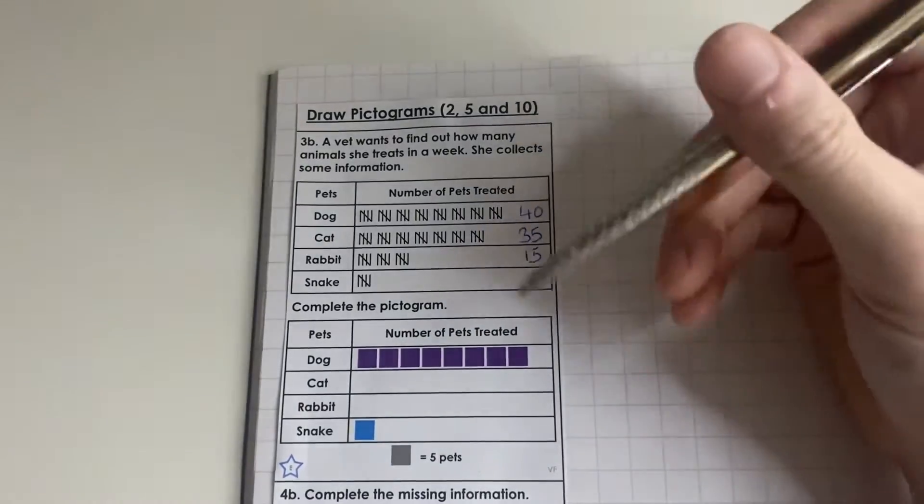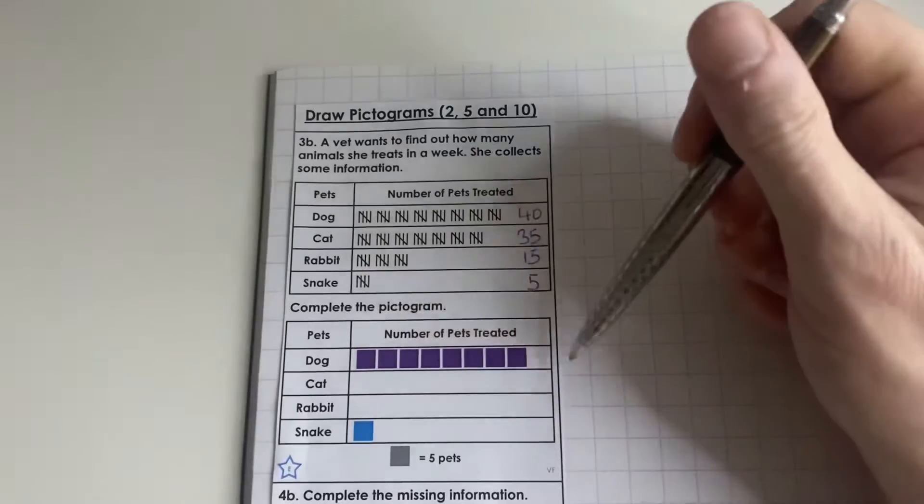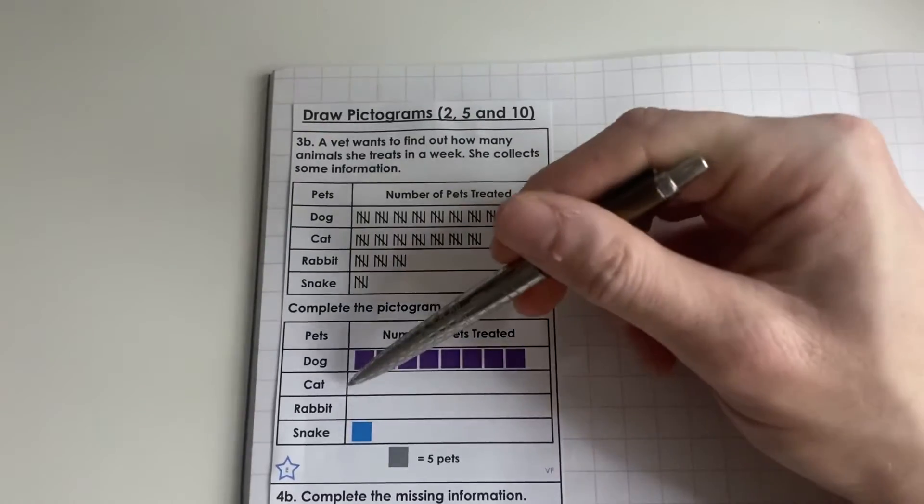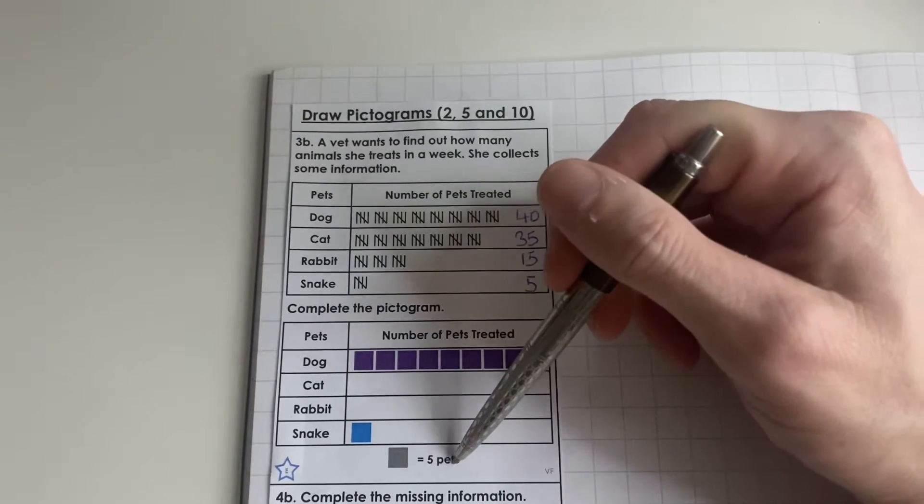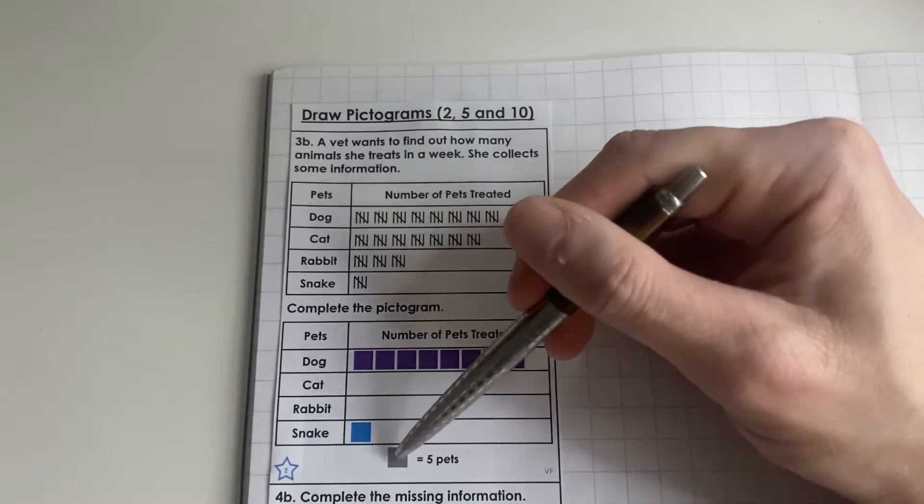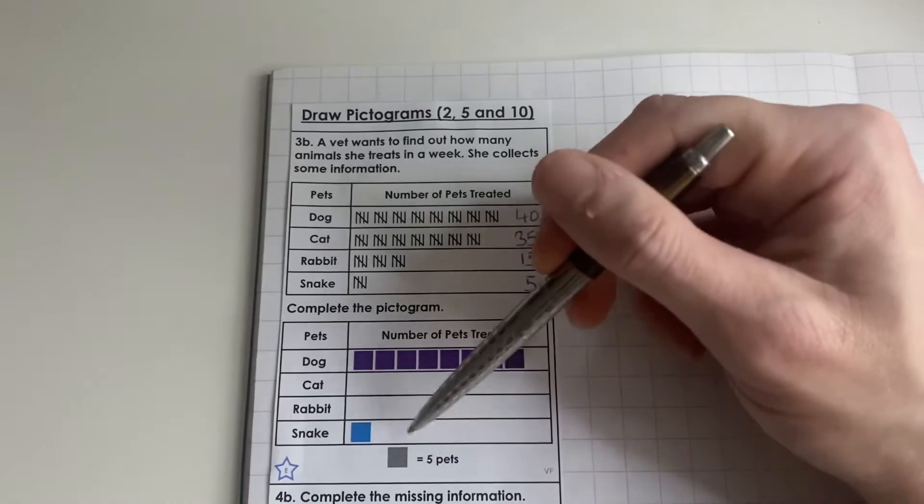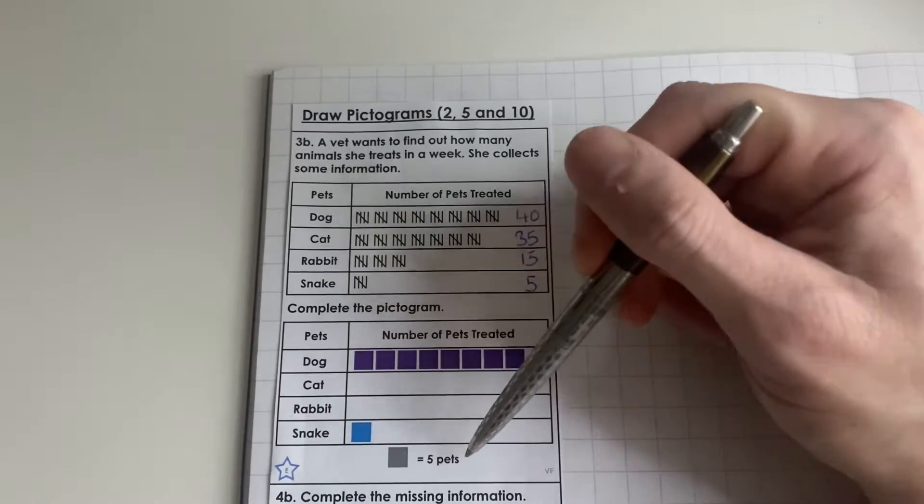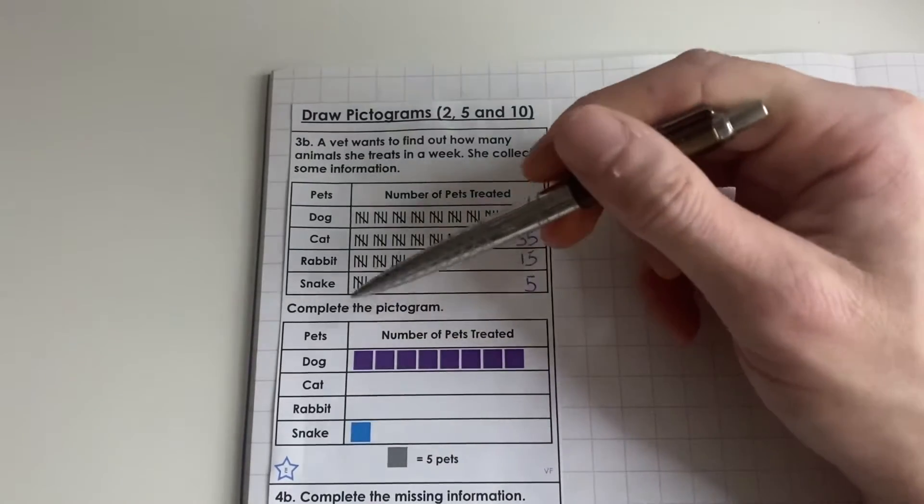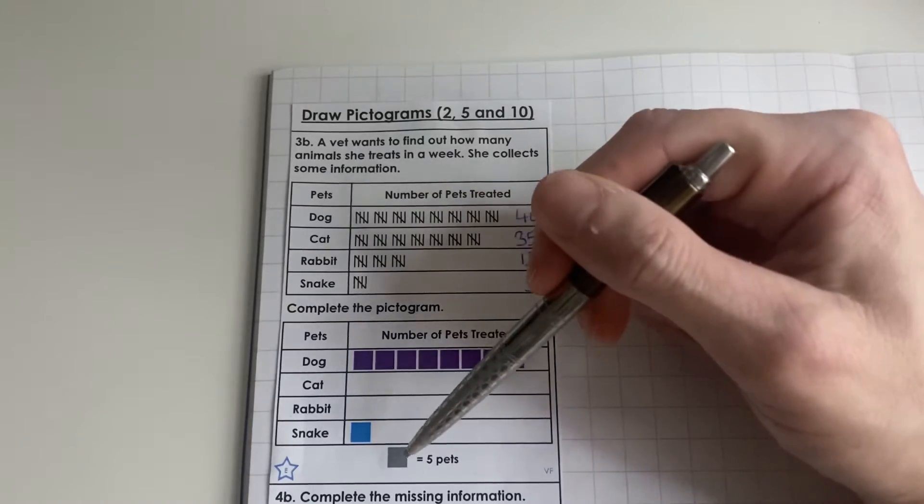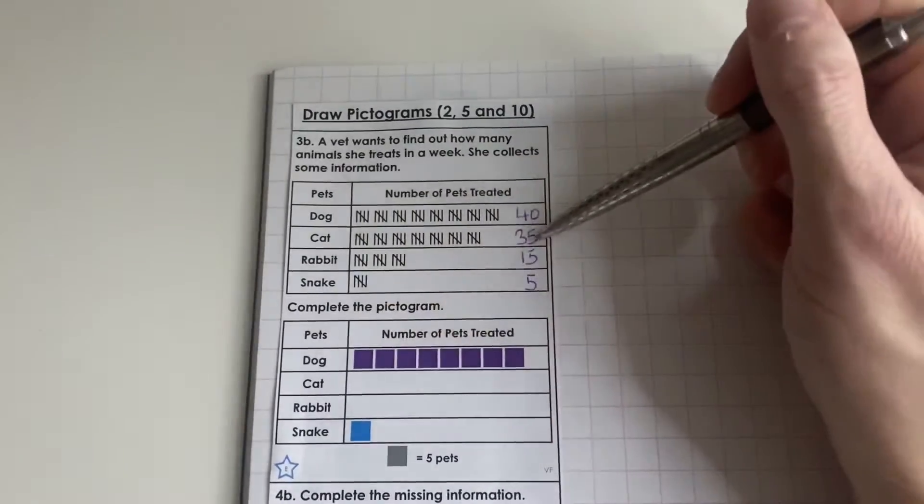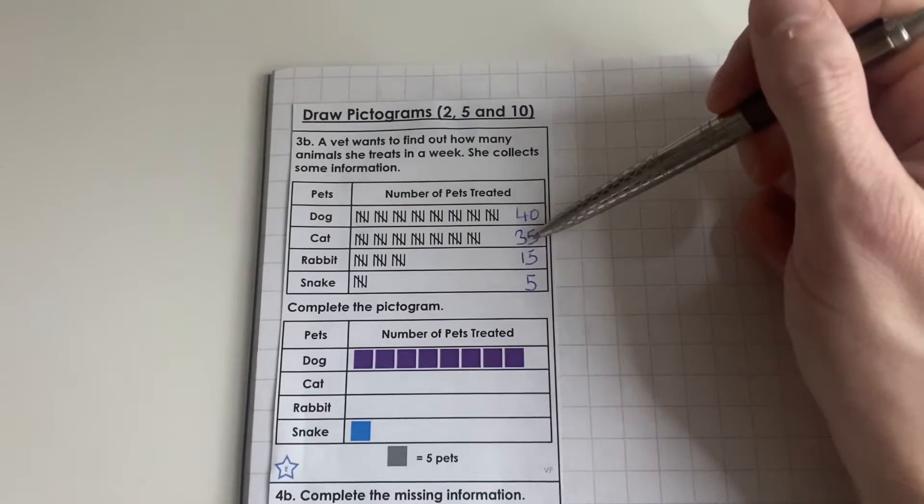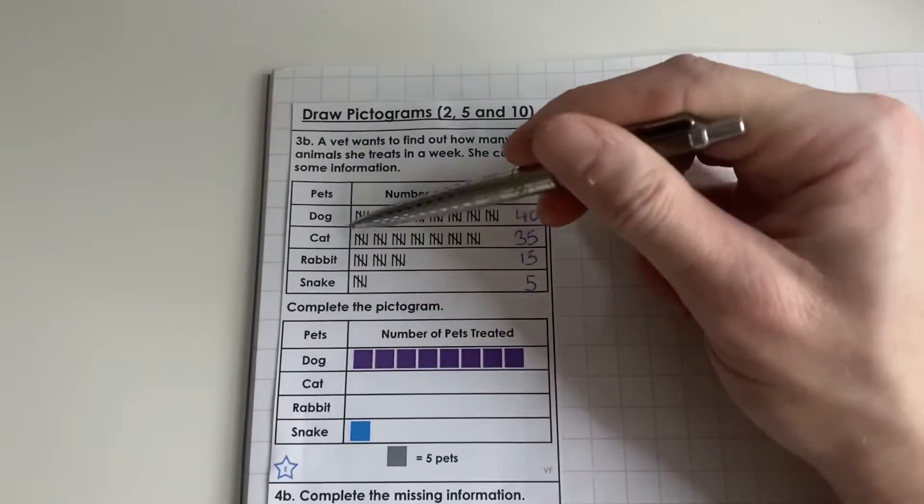Now we're going onto our pictogram. The dog has already been done for us and so has the snake, so we need to add in the information for cat and rabbit. Before we start, it says here is our key and each square is equal to 5 pets. We need to draw the amount of boxes that would show 35 cats have been treated.